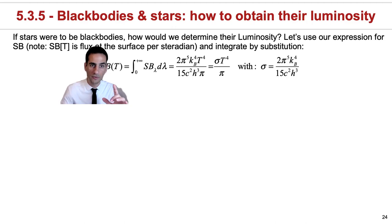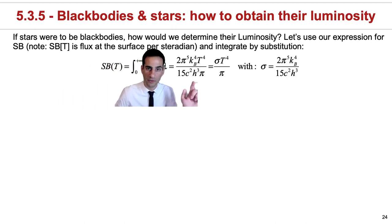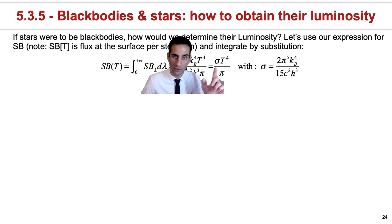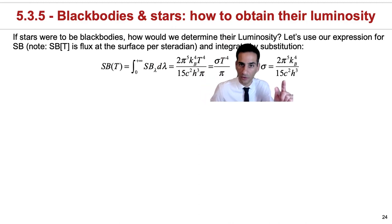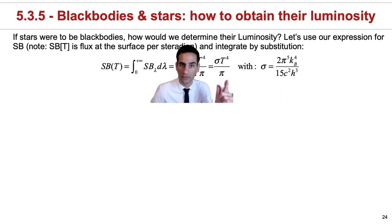If you do this for the Planck's law, this is what you get, and you can very easily collapse most of the variables into sigma, with sigma being given by this. So there's a lot of known constants as the speed of light, Planck's constant, Boltzmann constant, and there's a factor of pi there, and I will leave a factor of pi here and you'll see why.